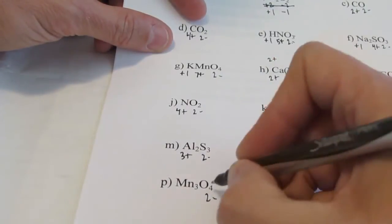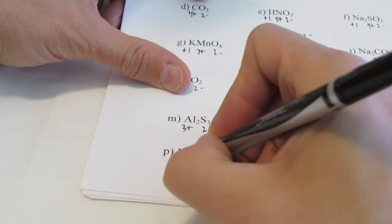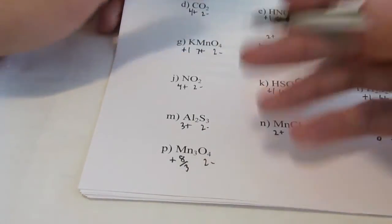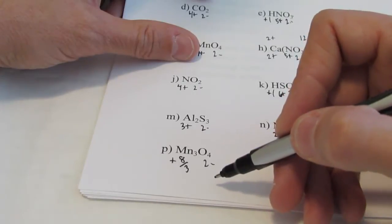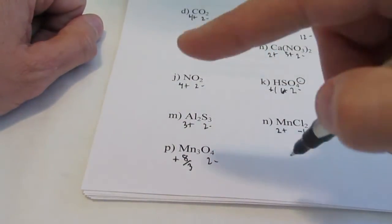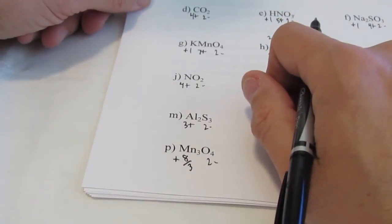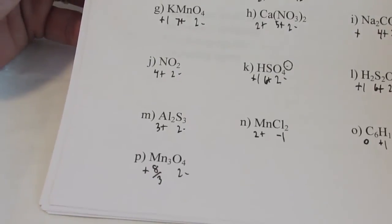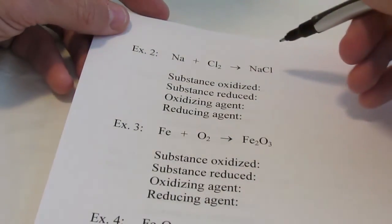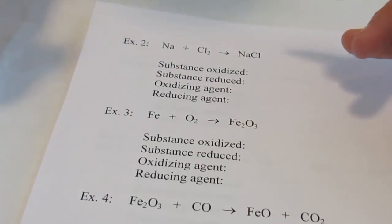Example P: Mn3O4. Oxygen is negative two, giving eight negatives total. I have to split that charge among three manganese atoms, which comes to positive eight-thirds on average. Some of those manganese atoms will be three positive and some will be two positive, for an average of eight-thirds. Two of them at three plus and one at two plus equals eight — that works. This is the average oxidation number of the manganese atoms in that compound. That's your quick lesson on oxidation numbers and vocabulary. In the next video, we'll apply this to chemical reactions — assigning oxidation numbers to each atom and determining what was oxidized, reduced, and what the oxidizing and reducing agents are. Stay tuned.